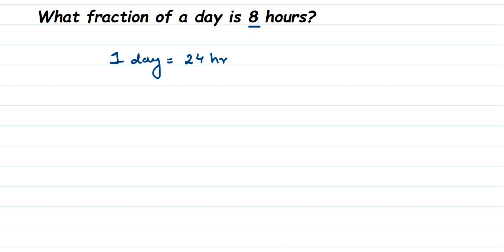So 8 upon 24 we have to do because they're asking a fraction of 8 hours. Out of 24 hours they're talking about the 8 hours, so 8 by 24. When you cancel this: 8 ones are 8, and 8 threes are 24, so this will become one third of a day.